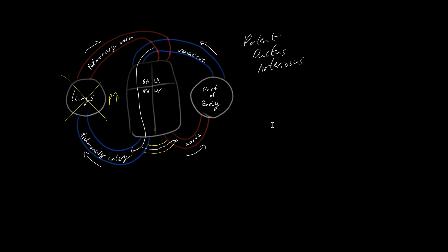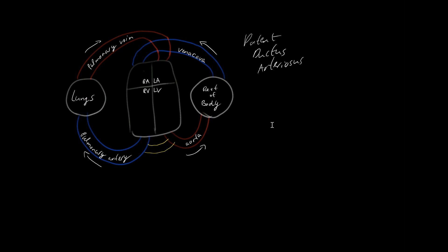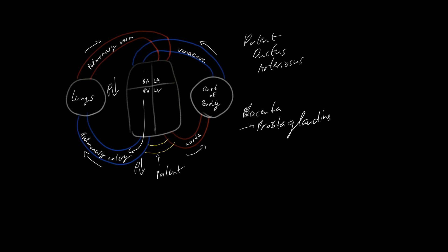This is a right-to-left shunt in the fetus, but it is not problematic because the fetal right heart blood is oxygen-rich thanks to the placenta. After birth the situation changes: the baby clears fluid from the lungs, pulmonary pressure drops, and blood starts flowing through the pulmonary artery normally. Removal of the placenta also removes prostaglandins, which were responsible for keeping the ductus arteriosus open.